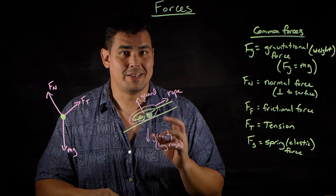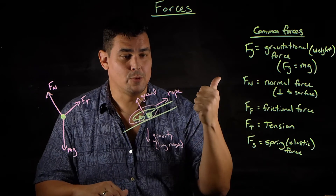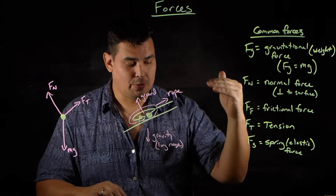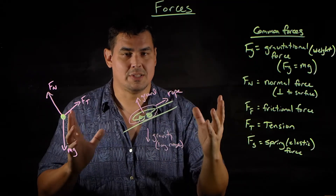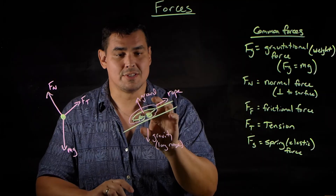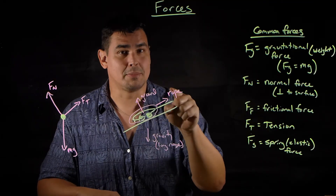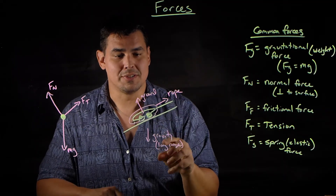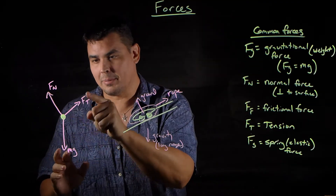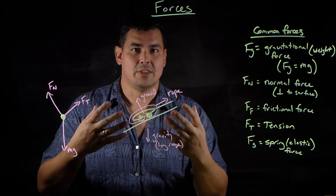After watching this, you should be able to identify forces based on the rules: forces must have an agent, and forces must be either contact or long-range. When identifying forces, follow the steps: determine what's in your system and environment, draw a circle around your system, identify by name the contact forces, then identify the long-range forces. Then you can draw a free body diagram. As you practice, it'll get easier and you can just start directly with the free body diagram.